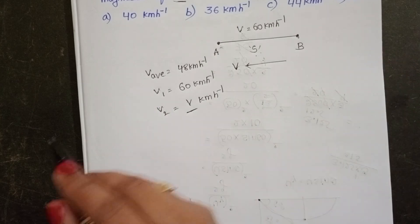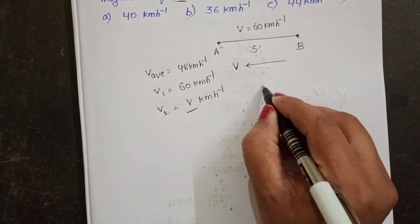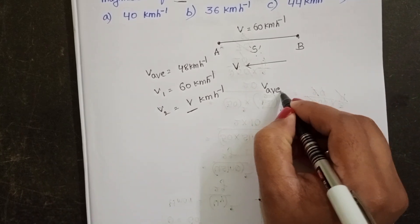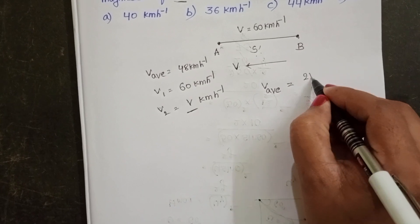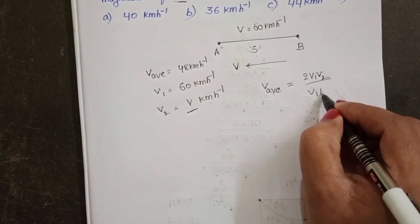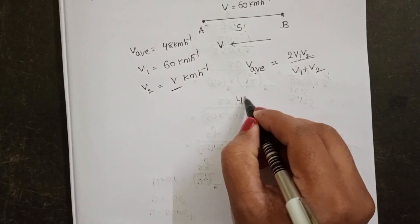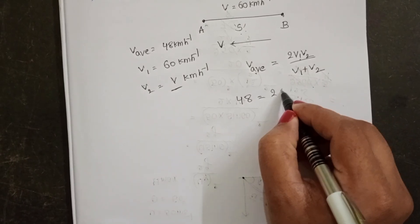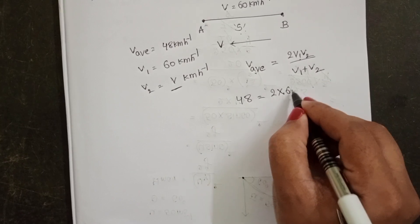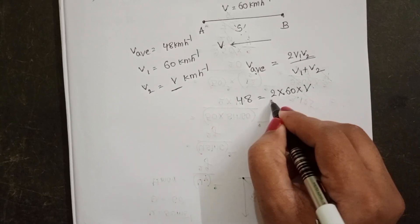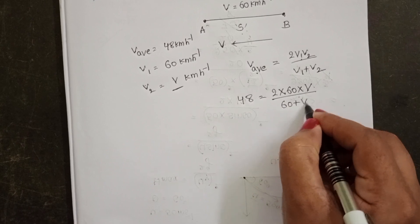When distance is divided into equal parts, the formula to find the average speed is 2V1V2 divided by V1 plus V2. Substitute the values: V average equals 48, which equals 2 times V1 times 60, V2 is V, divided by 60 plus V.